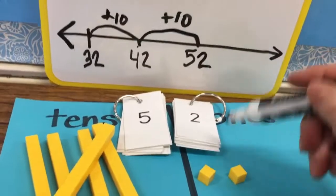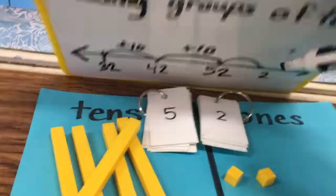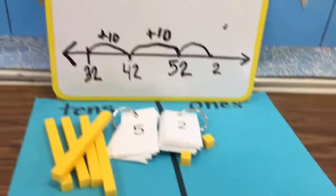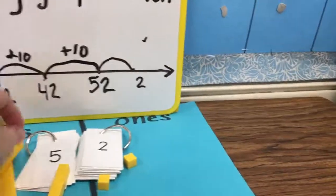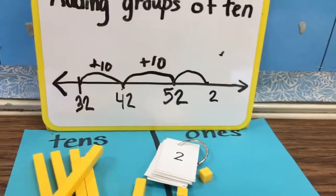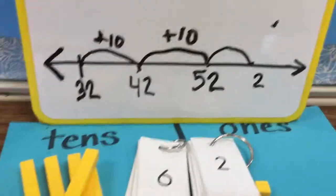But of course, my ones place is not going to change. It will still have two in the ones place. But my tens will change. If I add another group of 10, I no longer have 52. In fact, I have 62.